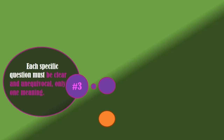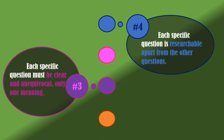Each specific question must be clear and unequivocal, meaning it gives only one specific meaning. Make sure that in stating your specific question, it is clear and unequivocal so that in trying to find answers to those specific questions, it will not be given different interpretations. The next guideline is that each specific question is researchable apart from the other questions. In formulating your statement of the problem, you have to see to it that each question is researchable on its own, and answers to that question can be identified apart from other questions.